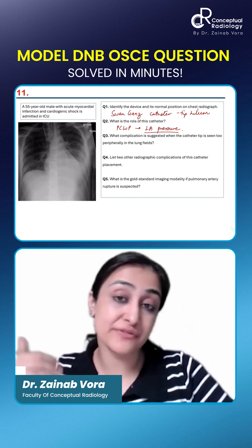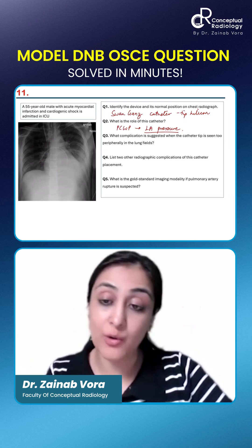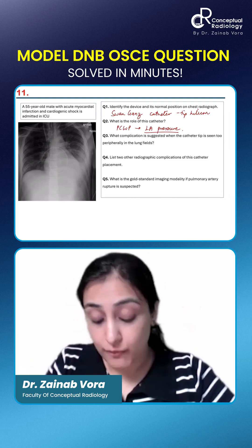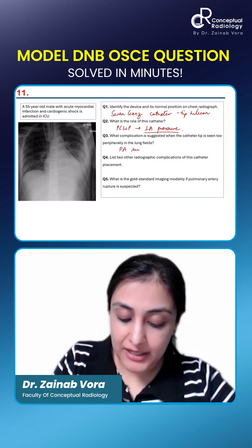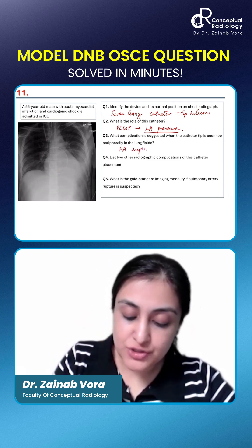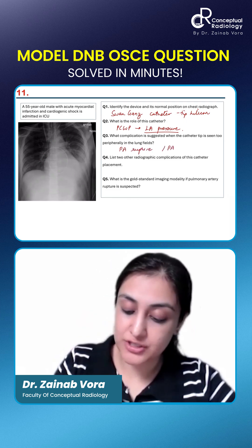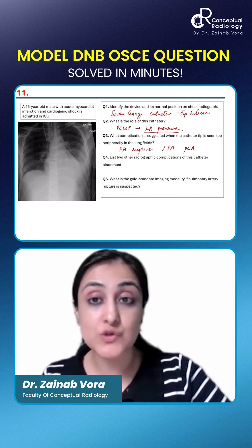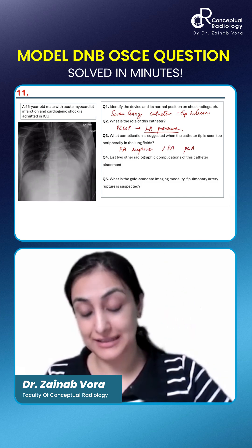What is the complication if it's too peripheral — if it goes out of the hilum? Obviously, you can have pulmonary arterial rupture. It can lead to pulmonary arterial rupture and pulmonary arterial pseudoaneurysm.